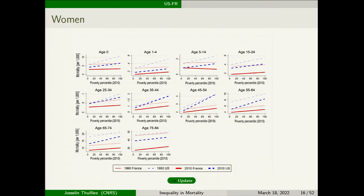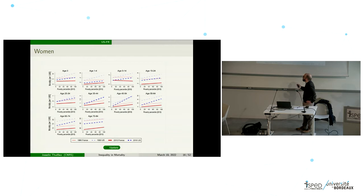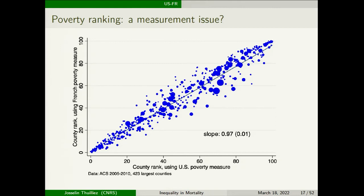If you look at women, you observe of course a difference between men and women in mortality levels, but basically the same pattern: France is flatter and the US is much more unequal than France.